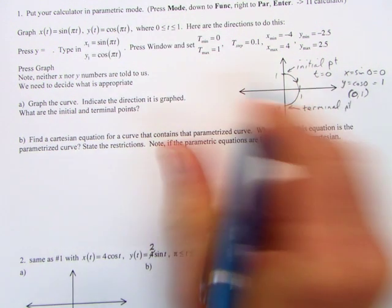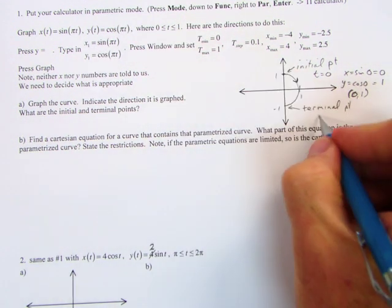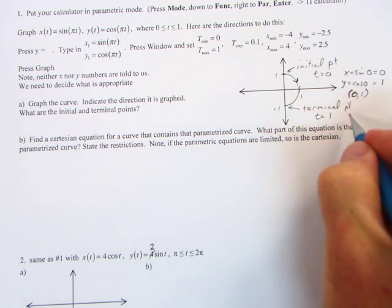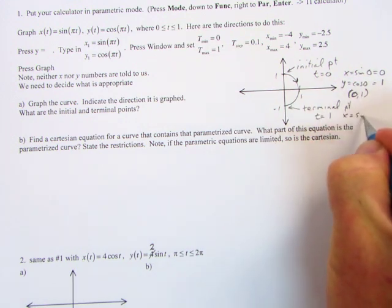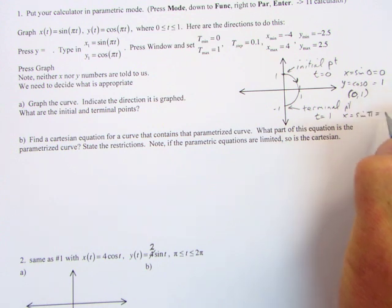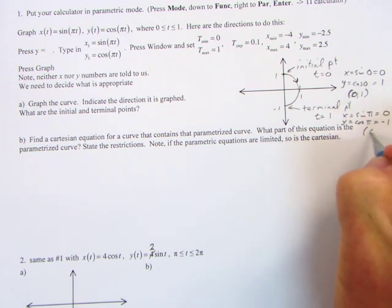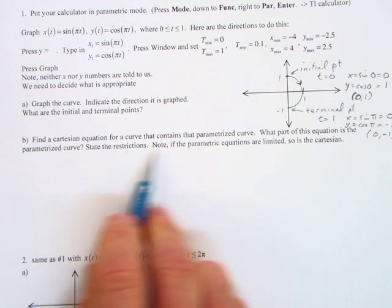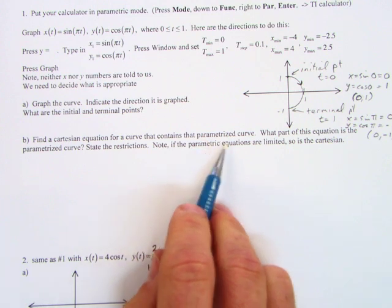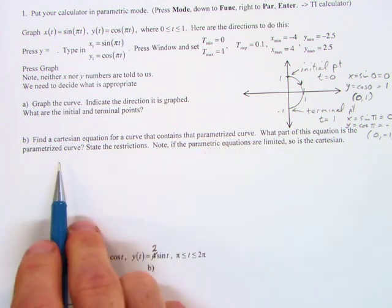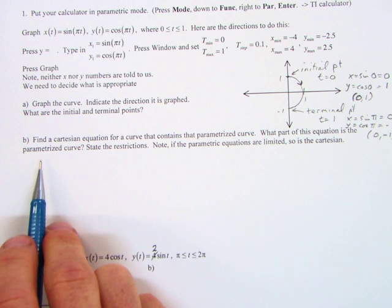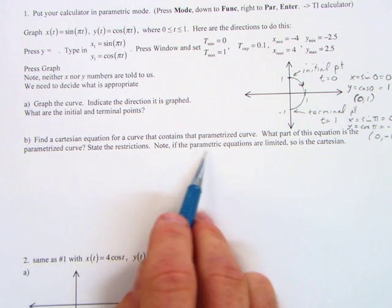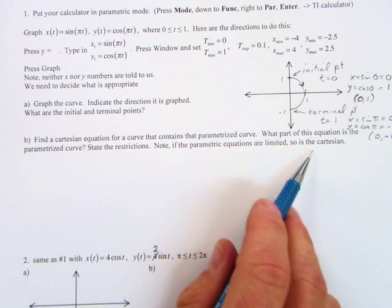Now we look at our terminal point, and that was at our final time period, our time value. So t equals 1. X equals the sine of π times 1, which is π. That is 0. Y equals the cosine of π, which is negative 1. So our terminal value will be 0, negative 1. Find a Cartesian equation for a curve that contains a parametrized curve. What part of this equation is the parametrized curve? State the restrictions. Note, if the parametric equations are limited, so is a Cartesian.